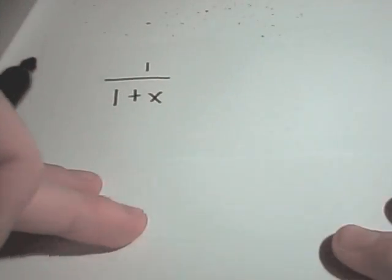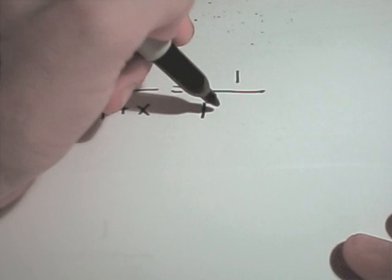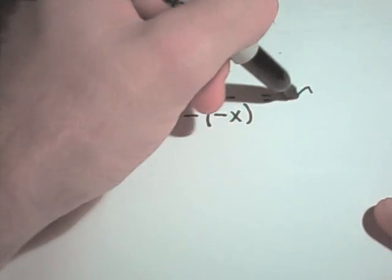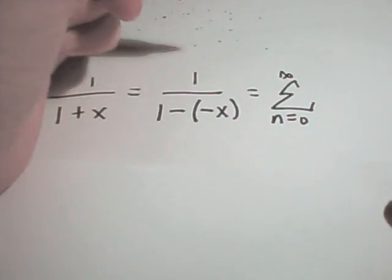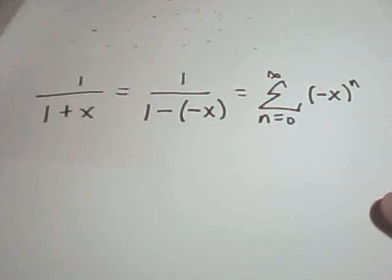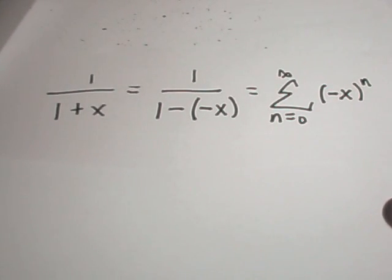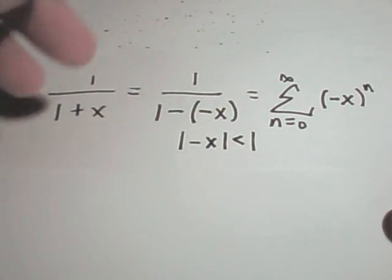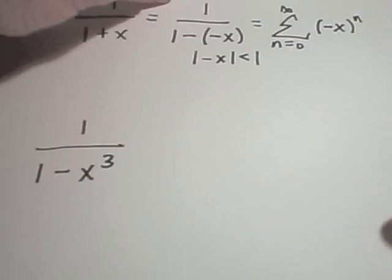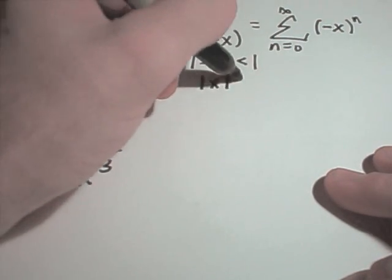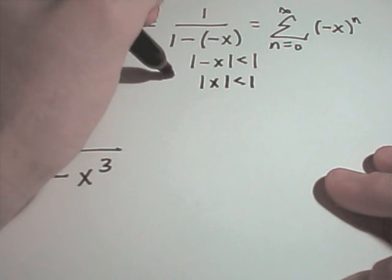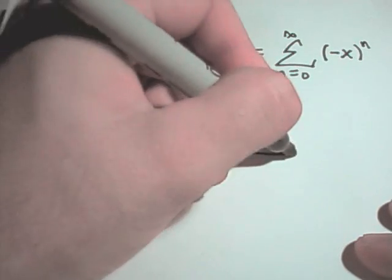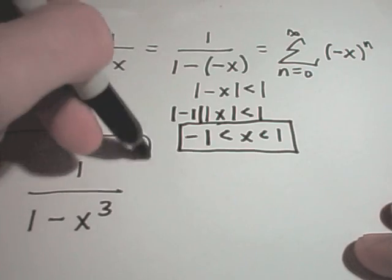For the first example we have 1 over 1 plus x. I need the form 1 over 1 minus something, so I write it as 1 over 1 minus negative x, since 1 minus negative x gives positive x. That gives the summation from n equals 0 to infinity of negative x raised to the n power. For the interval of convergence, the absolute value of negative x must be less than 1, which is equivalent to the absolute value of x less than 1, so x is between negative 1 and positive 1.